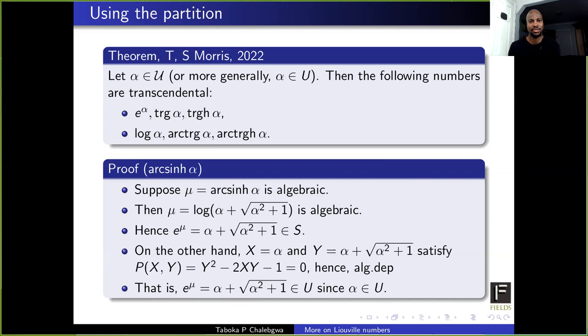That concludes part one of our talk — using Liouville numbers plus Mahler's classification to generate new transcendental numbers.